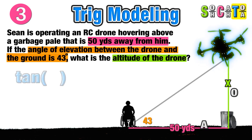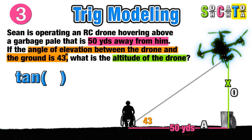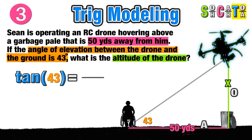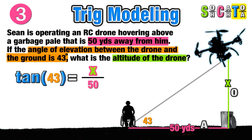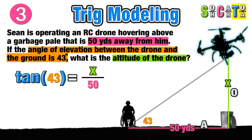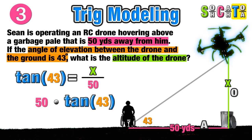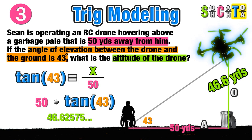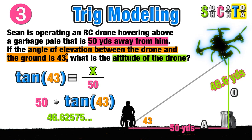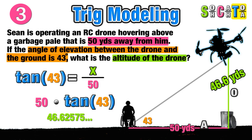We call the vertical height x. In reference to the 43-degree angle, we have the opposite and adjacent sides, so we use tangent. The tangent of 43 degrees equals x over 50, and since x is on top we multiply: 50 times the tangent of 43 degrees equals approximately 46.6 yards — the approximate altitude of the remote-controlled drone.